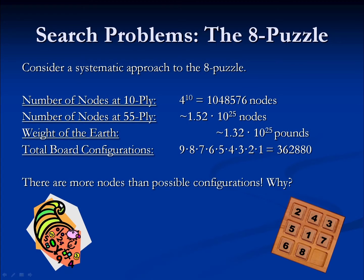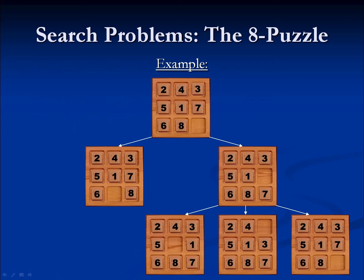The problem we're running into is one of duplicates. It's very easy for us to run into a problem state that we've already been to. This particular example is the easy one: we move the seven down, and then we move the seven up. This is called the toggle. And you might think, well, that's stupid — and you would be right, because computers are stupid.